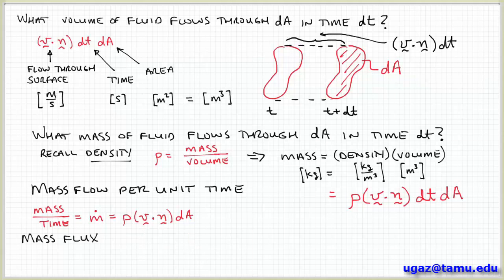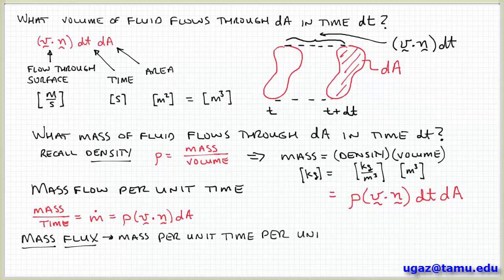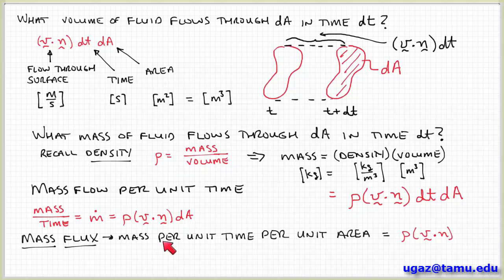Finally, we can ask what is the mass flux. Flux is a quantity per unit area, so this is the mass flow per unit time per unit area. If we divide the mass flow rate by dA, the mass flux — mass flow per unit time per unit area — is simply rho v dot n.